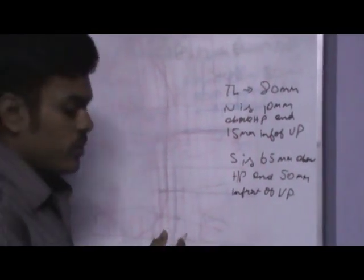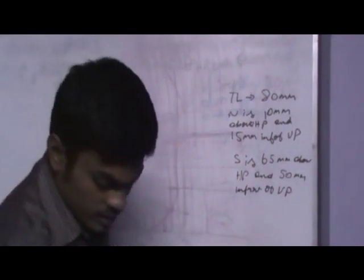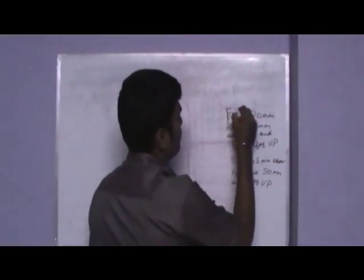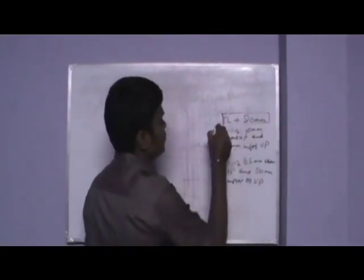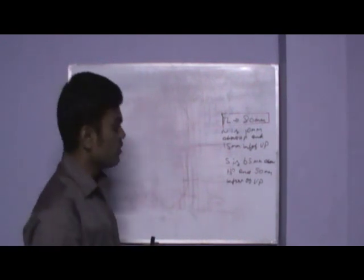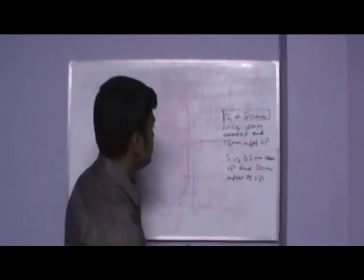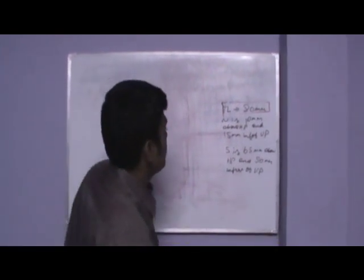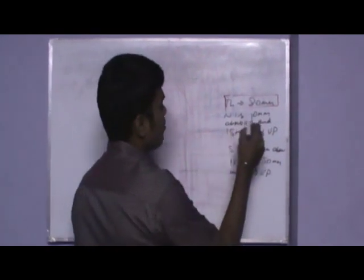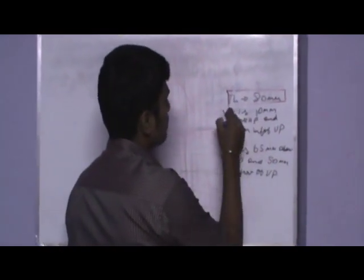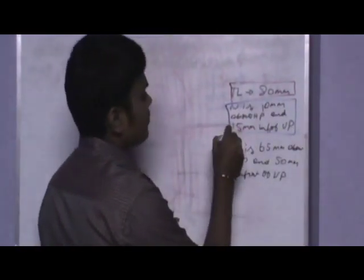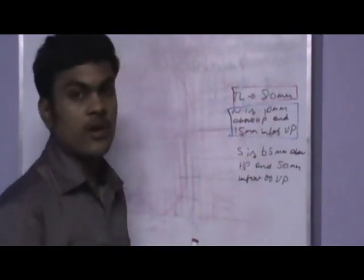Now what is given is the true length is 80mm. This is true length. And another thing what they are given is the one end of the line is 10mm above HP and 15mm in front of VP.